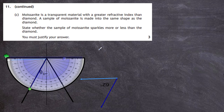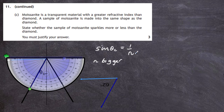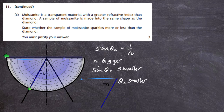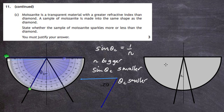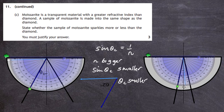Now the maths: sin θc equals 1 divided by the refractive index n. We are told that the refractive index of moissanite is bigger than diamond. If n is bigger, there is a bigger number in the denominator, so sin θc becomes smaller, which means the critical angle for moissanite is smaller than for diamond. Looking at a moissanite block, the critical angle is noticeably smaller, so a smaller range of angles will refract out.